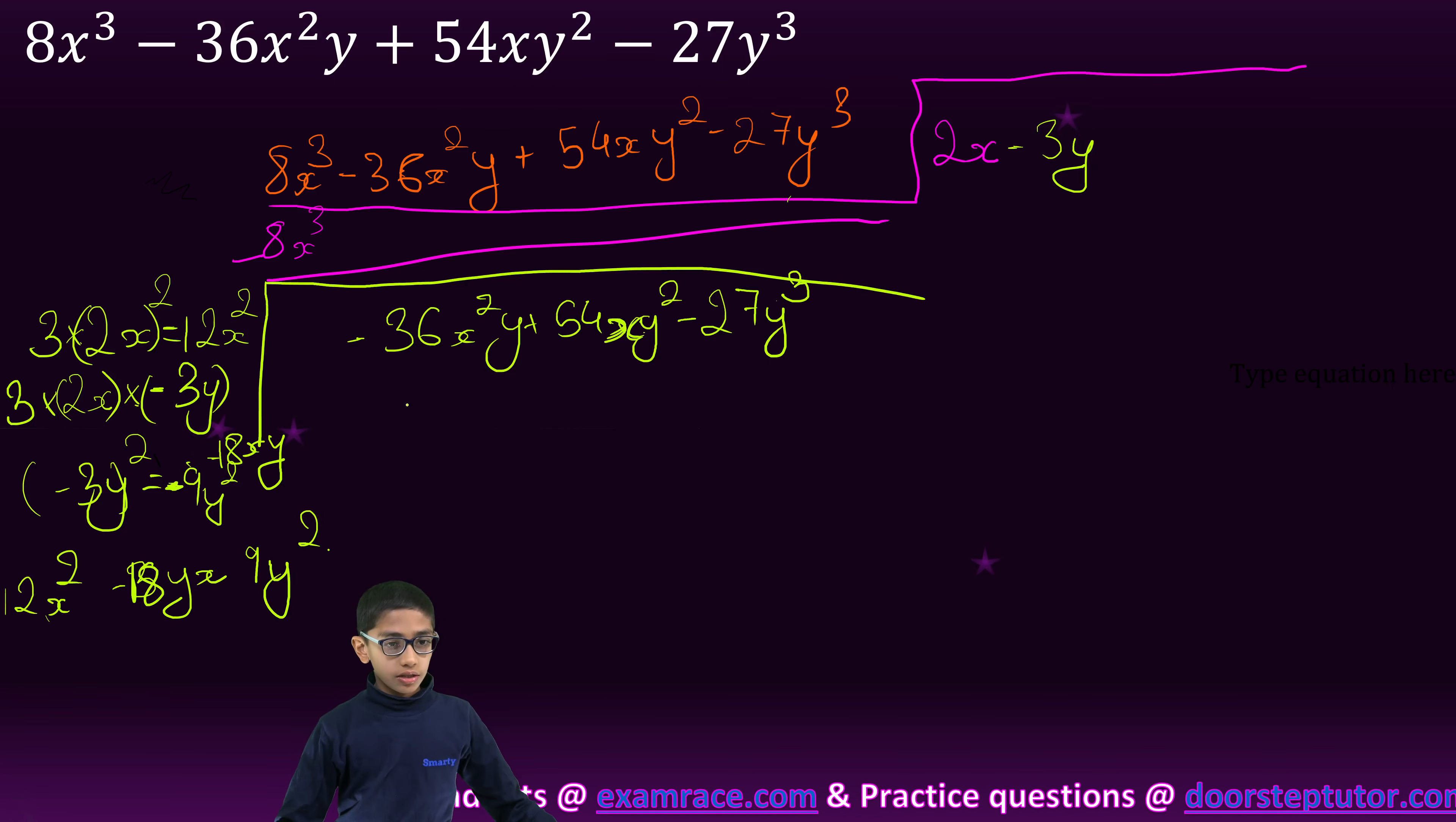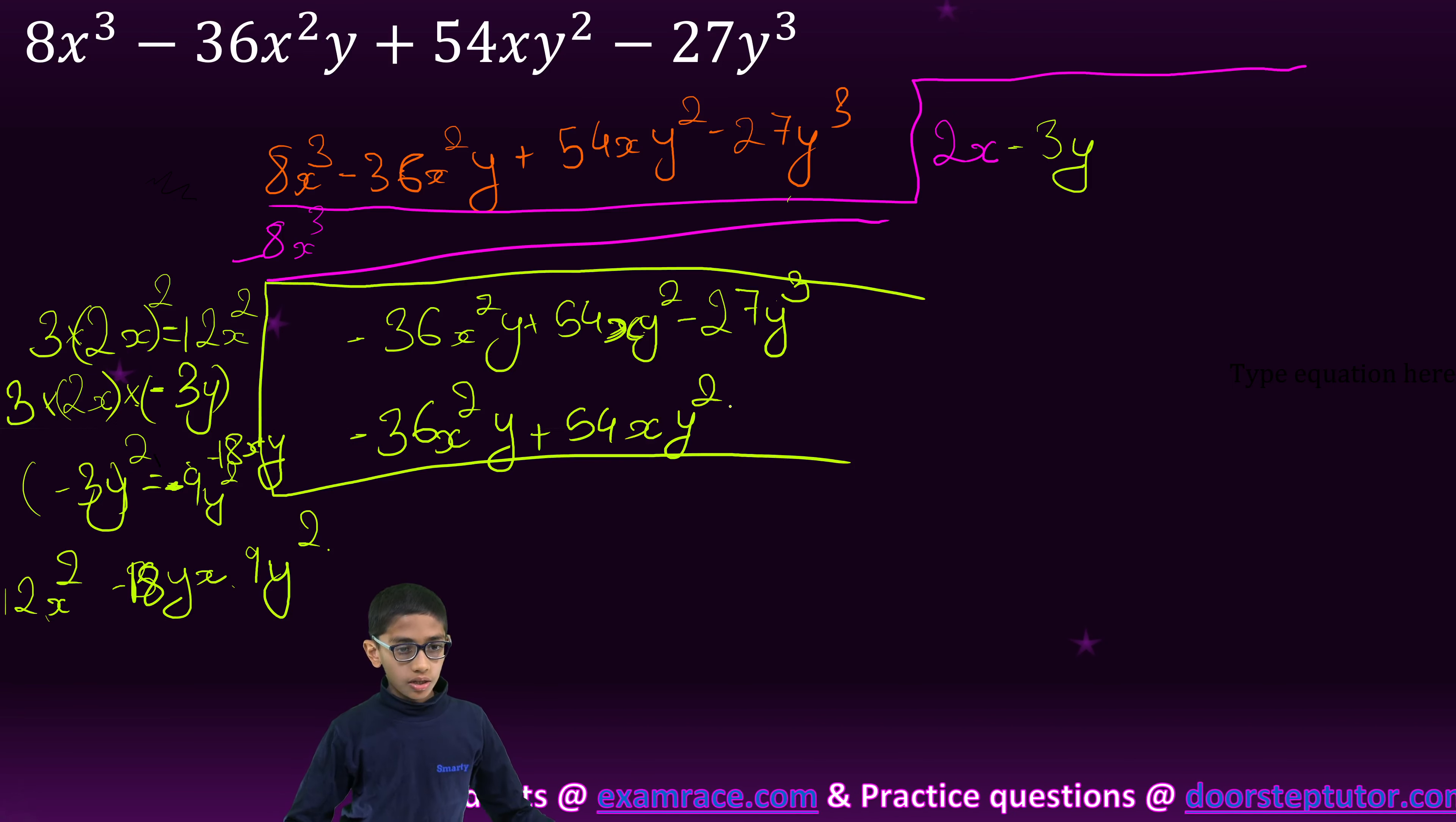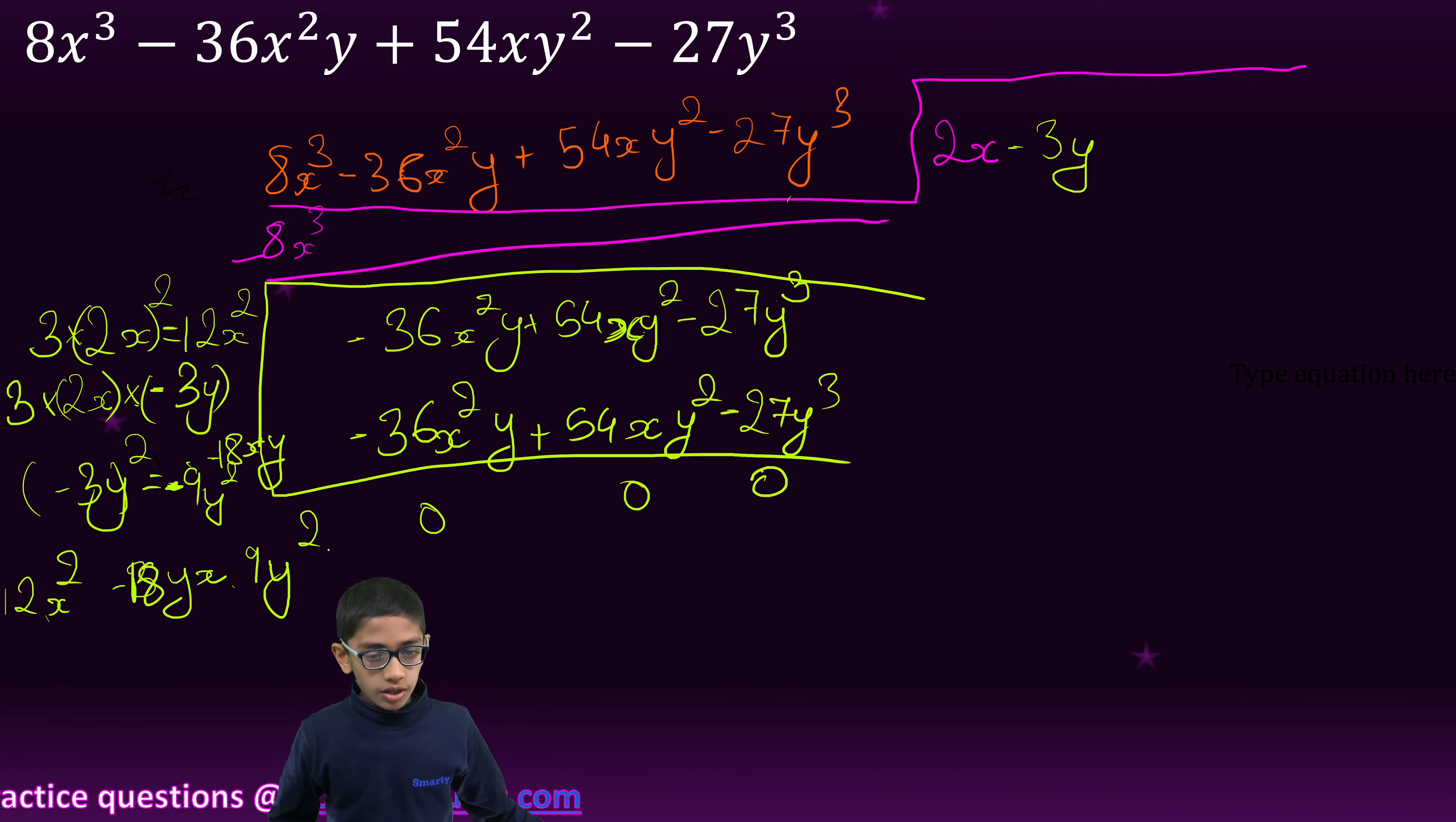We will multiply this whole by minus 3y. Our answer will be minus 36x²y plus 54xy² minus 27y³. And the remainder is 0, means the answer is 2x minus 3y.